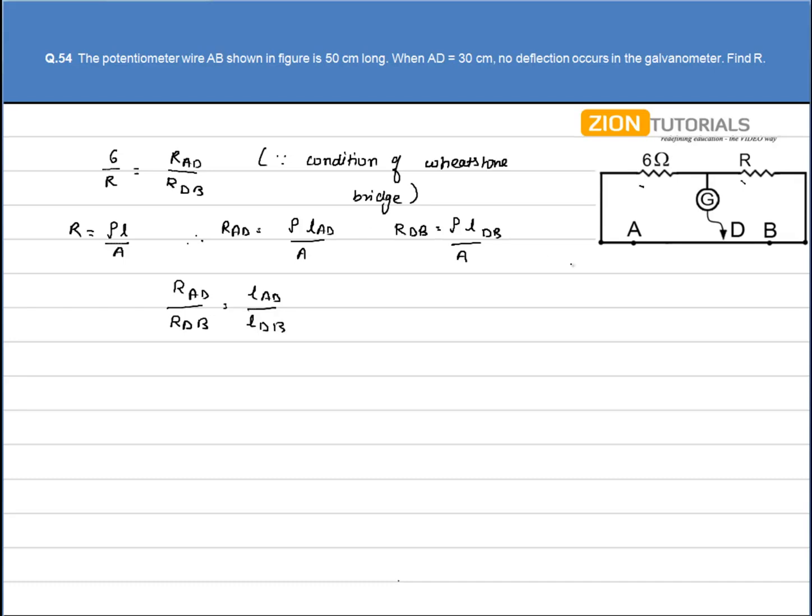Obviously the wire AB is made of same material, so resistivity will be same. And of course the wire is same, so area of cross section will also be same. So the ratio of the resistance of wire AD and DB is equal to the ratio of the length AD to that of DB.